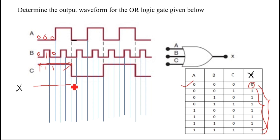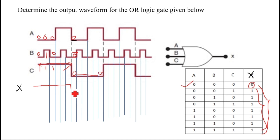Now C has become 0 for this whole duration, from here to here. So now we need to check the values of B and A. B is 0 for this small duration and A is also 0, so when all inputs are 0, the output becomes 0. For the next pulse, C is already 0, but B is 1, so no need to check A — directly make it 1.